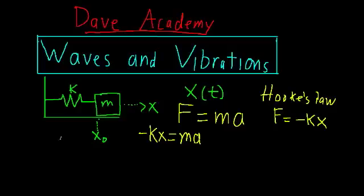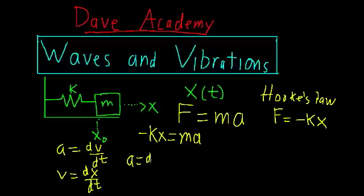Now acceleration is given by the derivative or rate of change of velocity, and for this case velocity is the rate of change of position, and our position of the block is denoted by x.